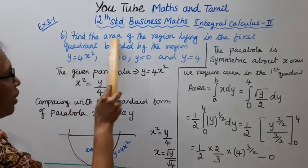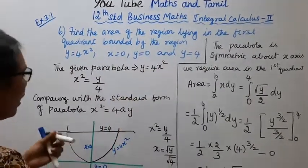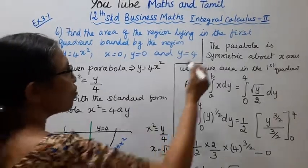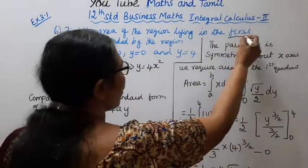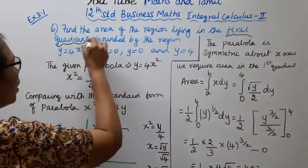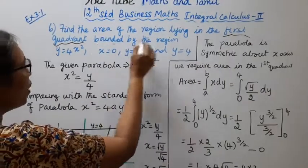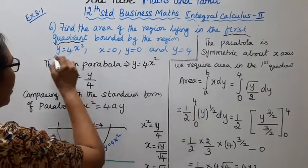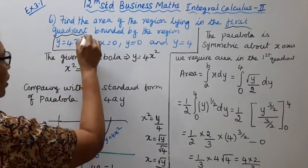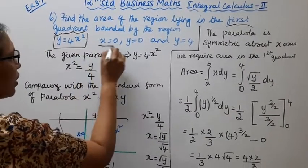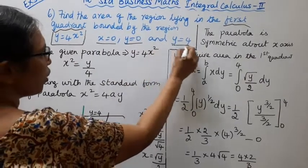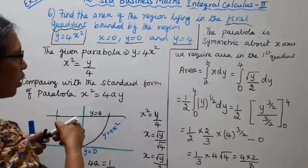Find the area of the region lying in the first quadrant, bounded by the region y equal to 4x square, x equal to 0, y equal to 0, and y equal to 4.